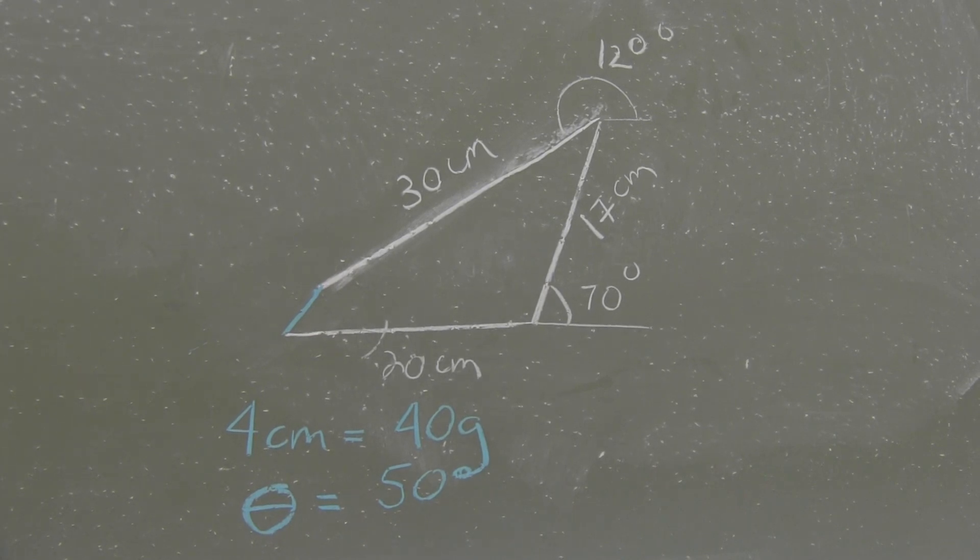Here you see a graphical representation of our three vectors: the first vector, 20 centimeters at zero degrees; our second vector, 17 centimeters at 70 degrees; and our third vector, 30 centimeters at 120 degrees. What we are interested in is in blue, the difference between all these. I've measured that and that would be four centimeters. The angle is 50 degrees.